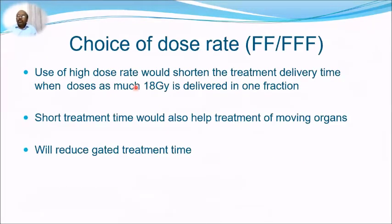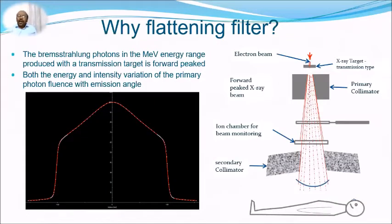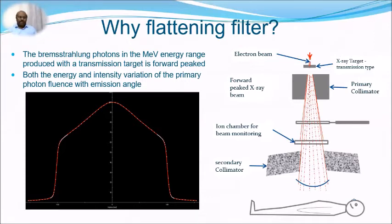Use of high dose rate shortens treatment delivery, which is important when delivering very high single-fraction doses such as 18 Gy, and also reduces gated treatment time. Regarding flattening filter-free (FFF) beams: the bremsstrahlung photons in the MV range produced at the transmission target are forward-peaked, resulting in a peaked beam profile without a flattening filter.